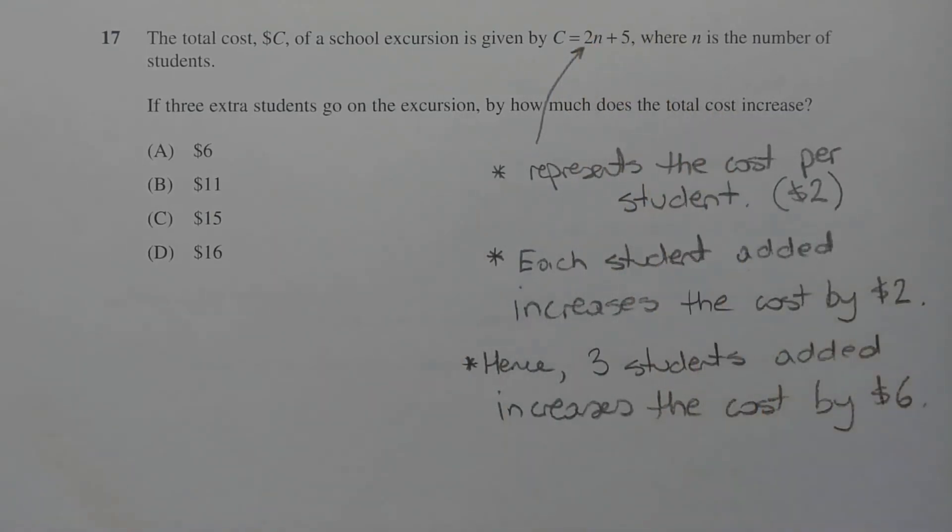This plus 5 is a fixed cost, regardless of the number of students that go on the excursion. So the plus 5 has nothing to do with this particular question.